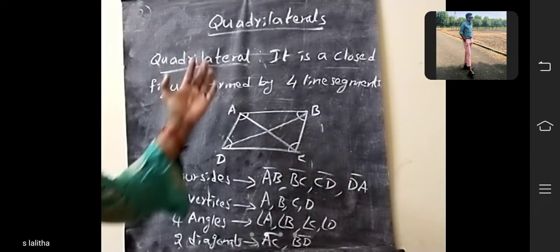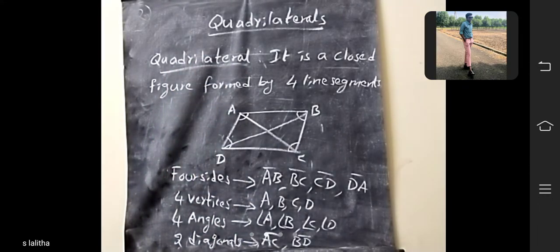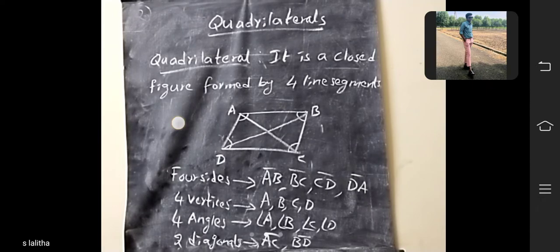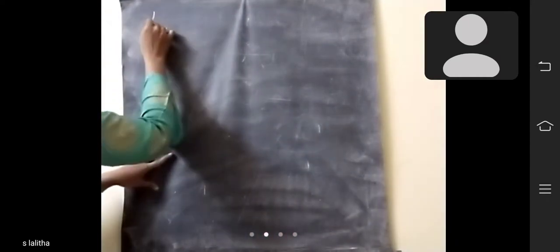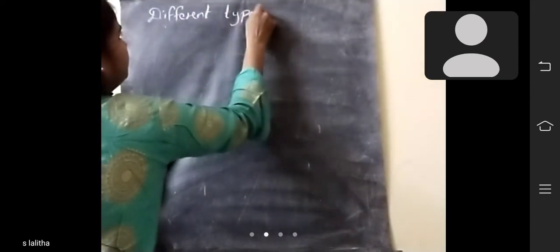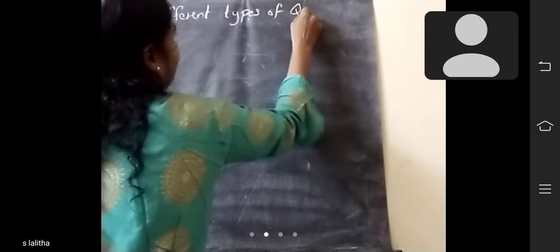Take your classwork and put the heading 'Quadrilateral' and write these up. Now we are going to the next topic: different types of quadrilaterals. In a quadrilateral, we have different types.